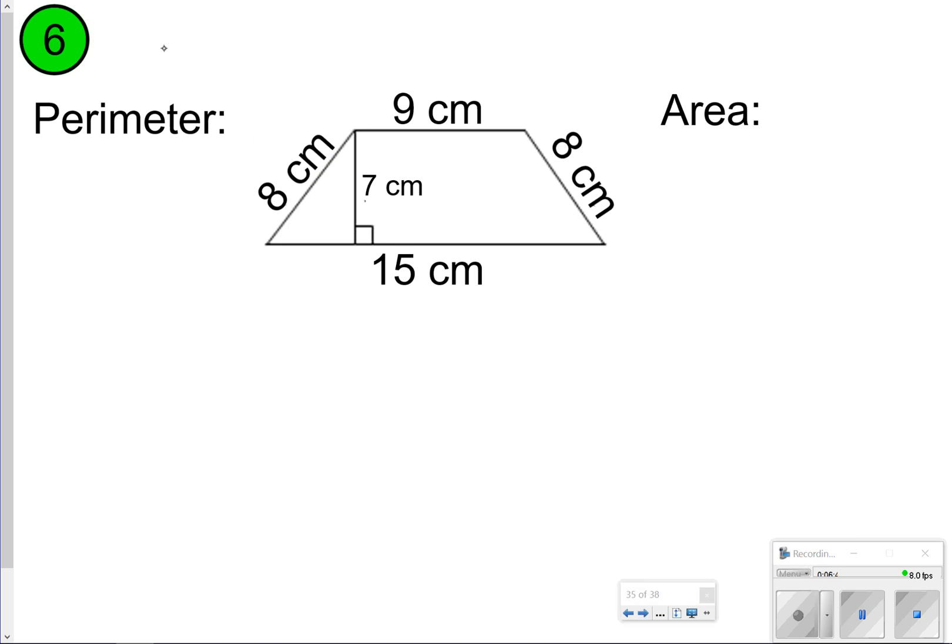Here's another one you're going to try. Let's just keep trying these to make sure we're good at them. Pause it. Once you're done, click play. I'm going to go ahead and set up both of my problems. 8 plus 9 plus 8 plus 15 will give us our perimeter, and that is going to give us 40 centimeters.